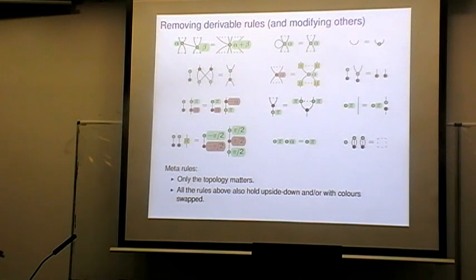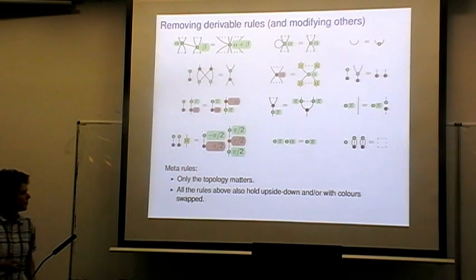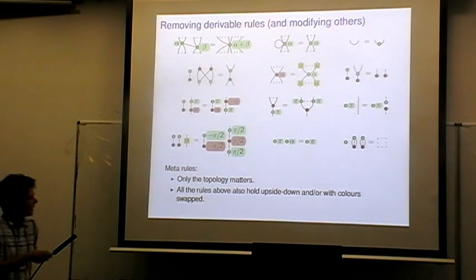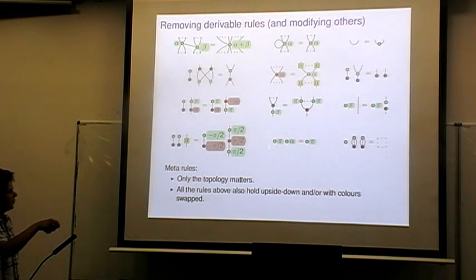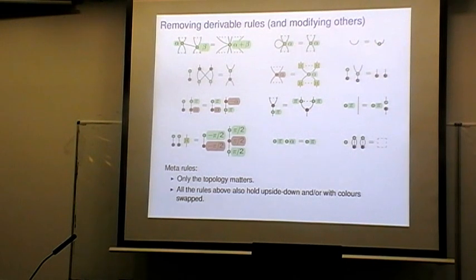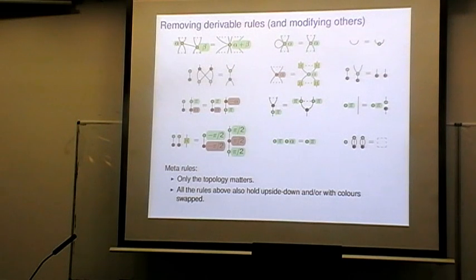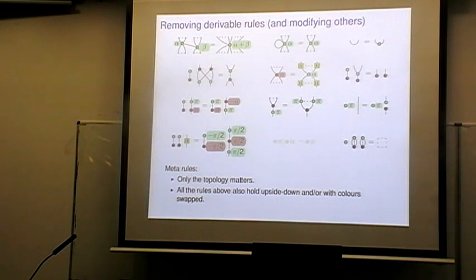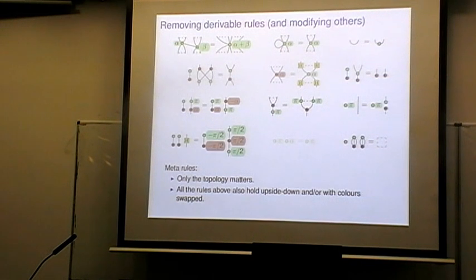We're definitely keeping the inverse rule. Next to it is a rule with a node with phase pi — the green node with phase pi has the value zero, showing those diagrams correspond to the zero matrix. We currently have two different rules that deal with these zero matrices, but it turns out we only need one and can remove the other. The Euler decomposition of the Hadamard can't be removed, but we can simplify it slightly by replacing the red node with phase pi-by-2 with a construction where we have a green phase pi-by-2 clamped into the red node, getting rid of the disconnected scalar parts.